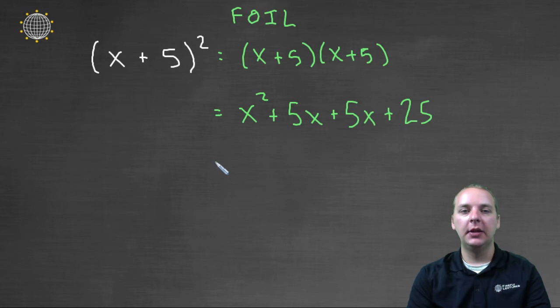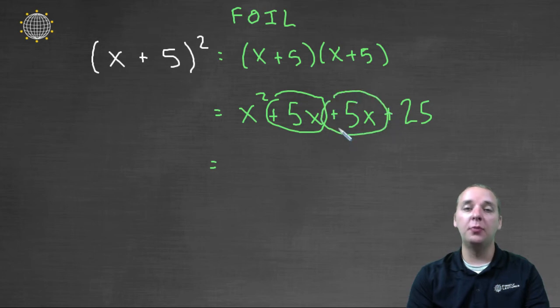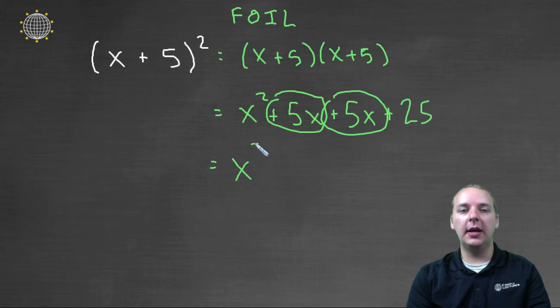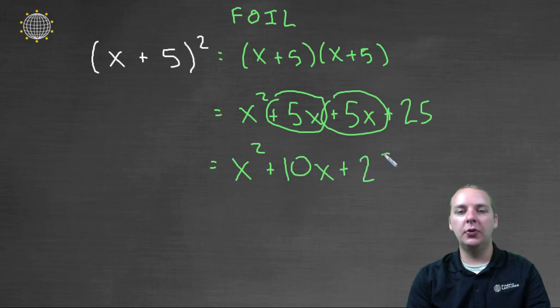Take a quick look, see if there's any like terms, I do see a couple. I see plus five x, and plus five more, five x more. So the final answer would be x squared, five x and five x make ten x, and then your constant of twenty-five.